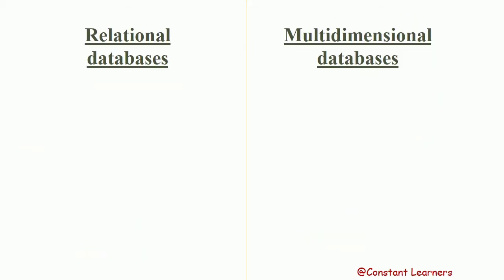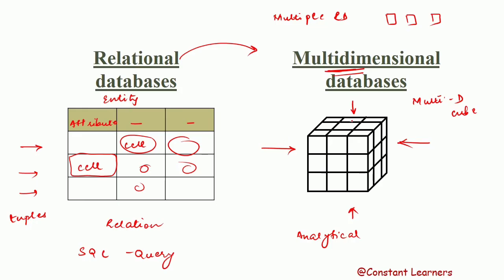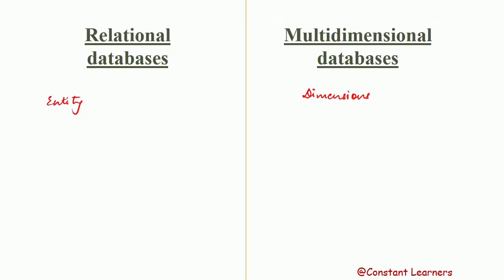Relational databases are based on an entity — the theme or concept on which the table is based. Multidimensional databases are based on dimensions, which are similar to entities. Multiple dimensions or concepts can combine together to form a multidimensional database. In relational databases, attributes are the columns that store the data. In multidimensional databases, the equivalent is called facts — facts are what actually store the data about the dimensions.